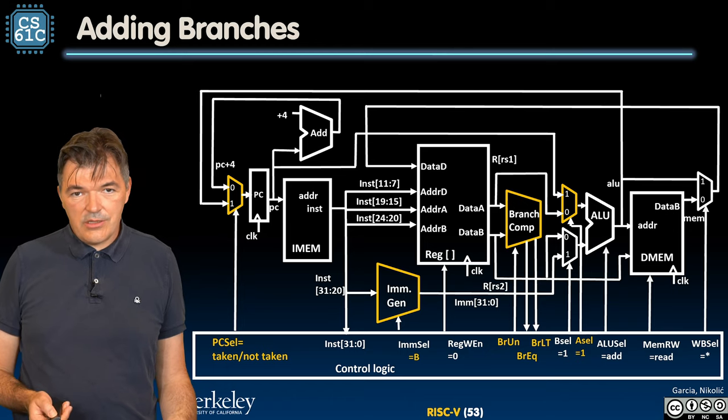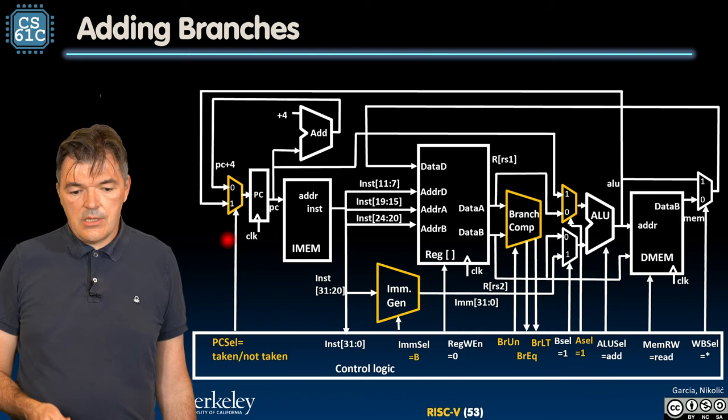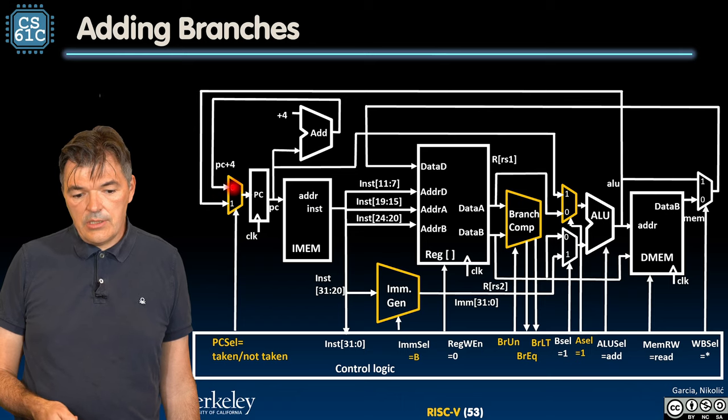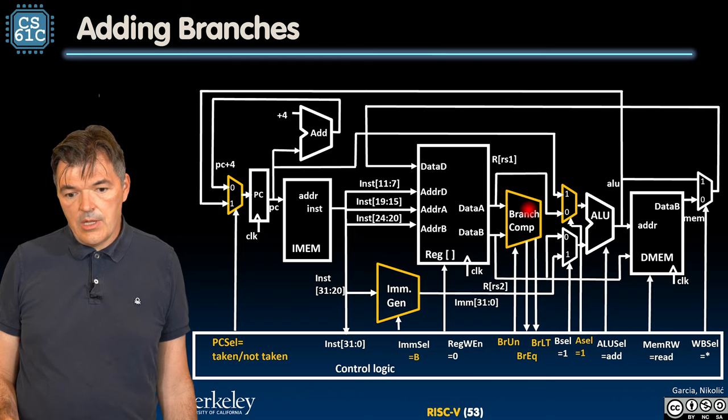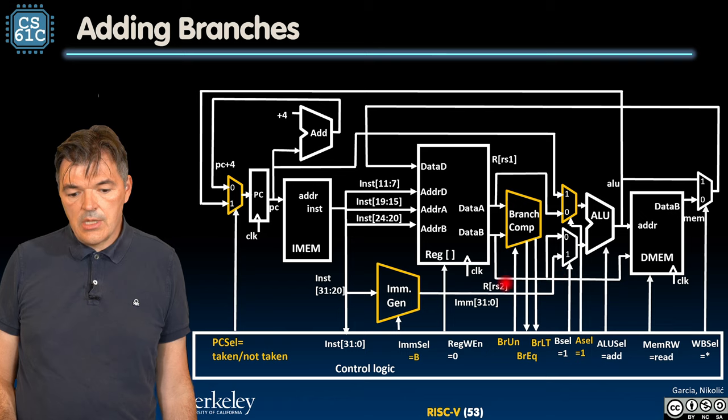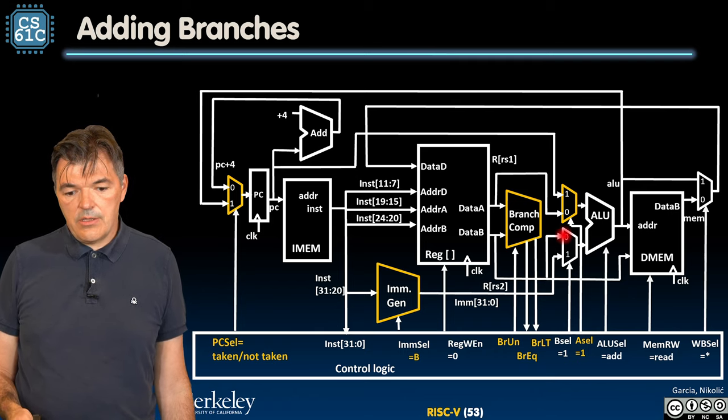So let's take a look at how we modify the data path. Here is our new data path. It got a few new additions. Most notable one is that we have a multiplexer in front of the program counter that enables us to write either PC plus 4 or the new address. Then we have a little bit bigger piece of hardware that does the branch comparison. It takes one input, whether the branch is signed or unsigned, and produces two single bit outputs, if the values are equal or less than each other.